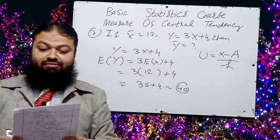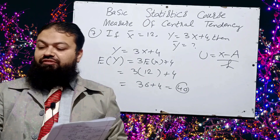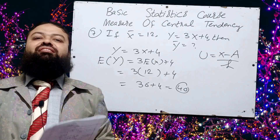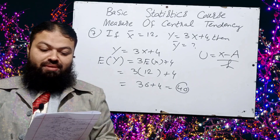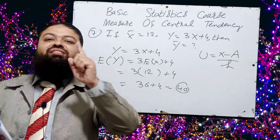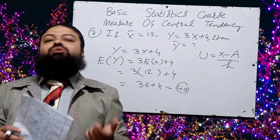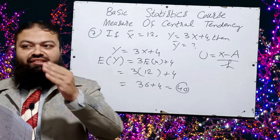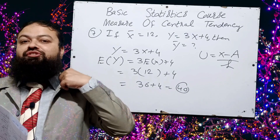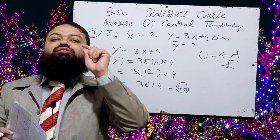Question number eleven: the suitable average for the size of shirts — small, medium, large, and extra large — is mode. Mode is the most repeated value in the data. When you are interested in the size of shoes, shirts, or collar size, mode is the suitable average.